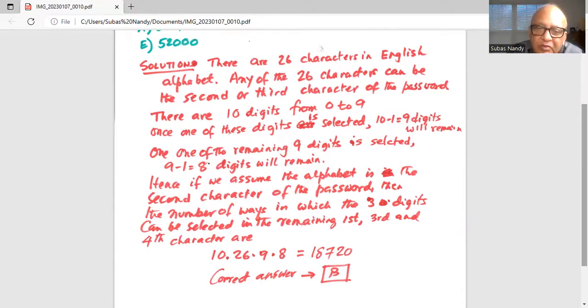So what are the number of ways? 10 for the first digit, because zero to nine there are 10 digits, multiplied by 26. 26 comes because there are 26 possible alphabets, multiplied by the next two different digits and there are 9 digits left when one digit is selected in the first position.